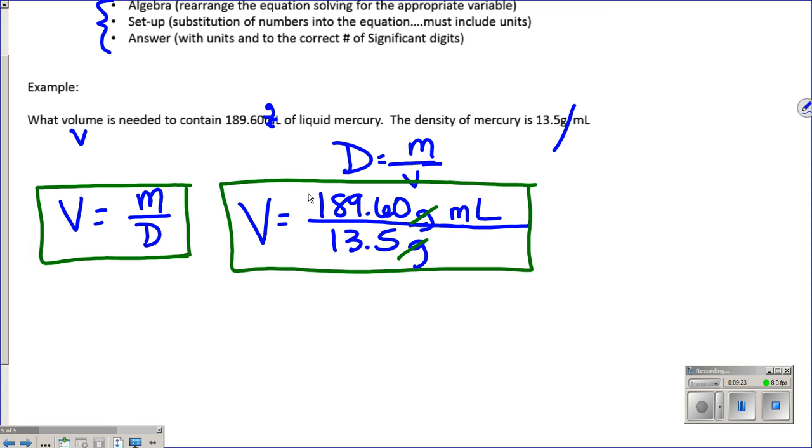The third point will consist of the answer with the proper units and the proper significant digits. So the volume, we have 189.60. That has five significant digits divided by 13.5, which only has three significant digits, which means our answer should be expressed to three significant digits, 14.0. The only unit that's left is milliliters, so that is the unit, and that is the third point.